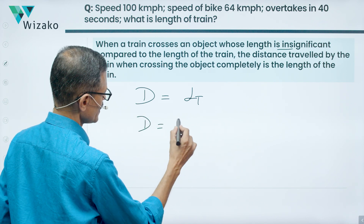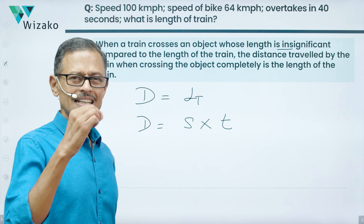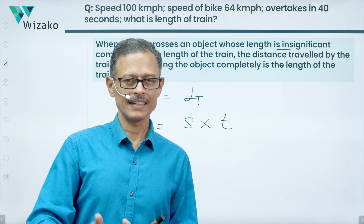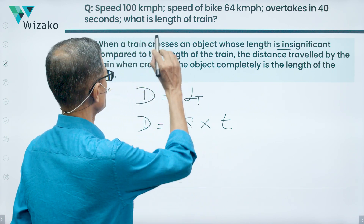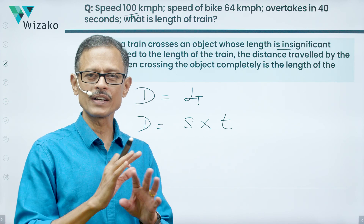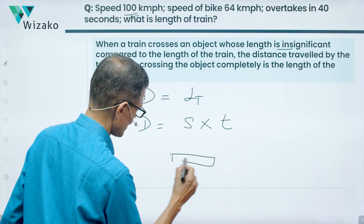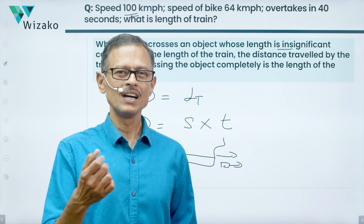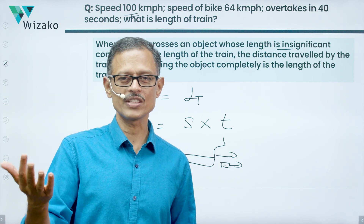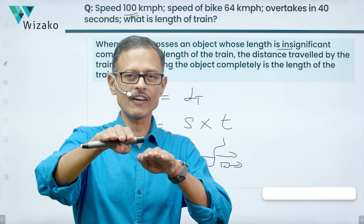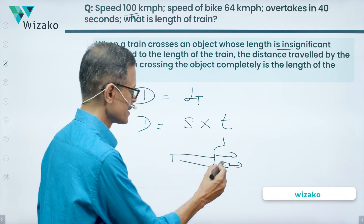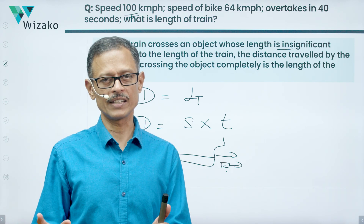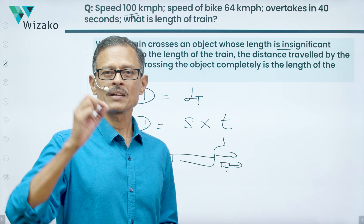Normally we'd find distance using distance = speed × time. If the object were stationary — a man, a lamp post, a signal, or a parked bike — we'd simply use the train's speed. But here the bike is also moving, and both are traveling in the same direction. We can tell this because the train is overtaking the bike, not crossing it head-on. Since the bike is a moving object, we cannot use just the train's speed.